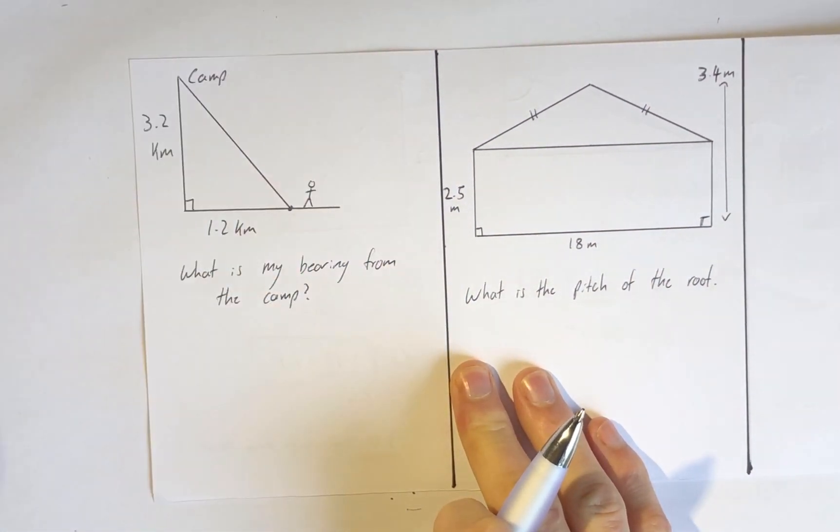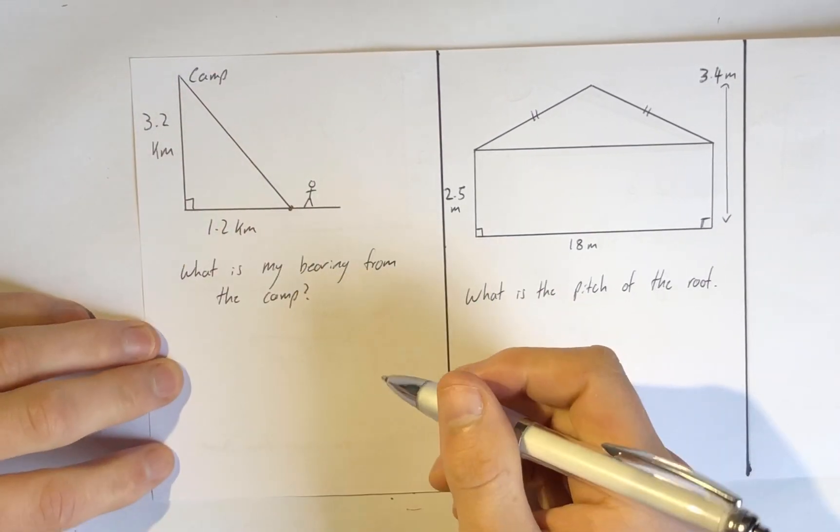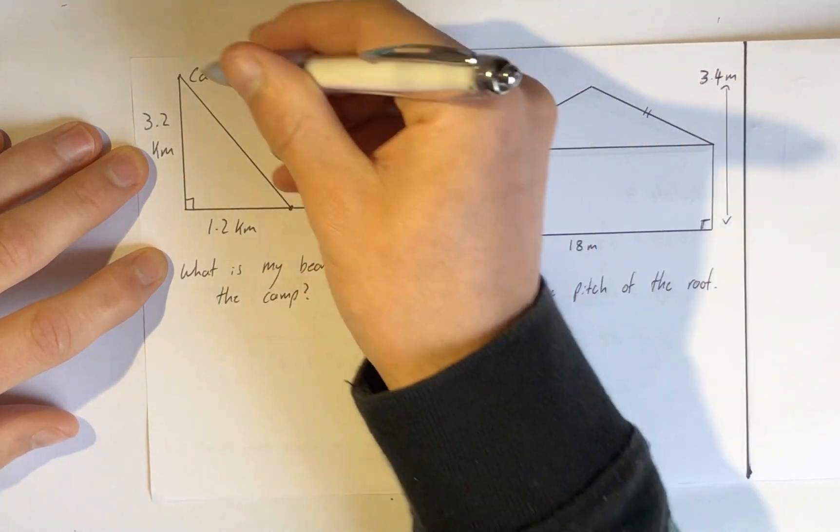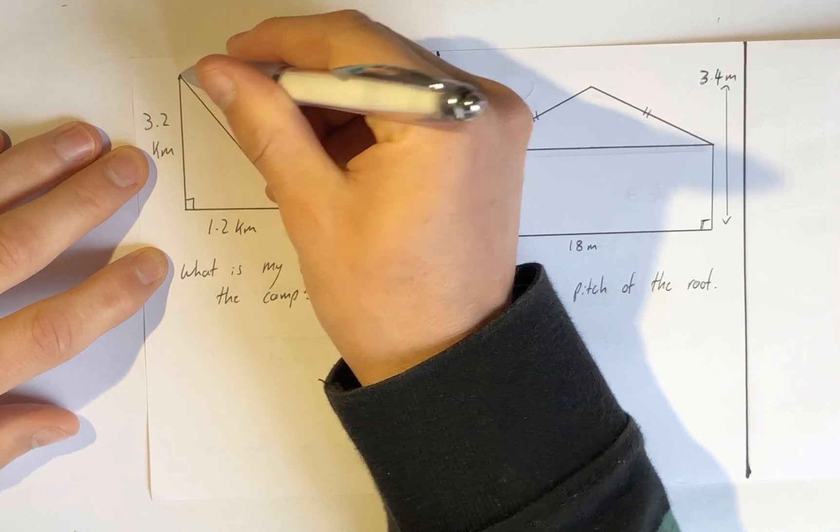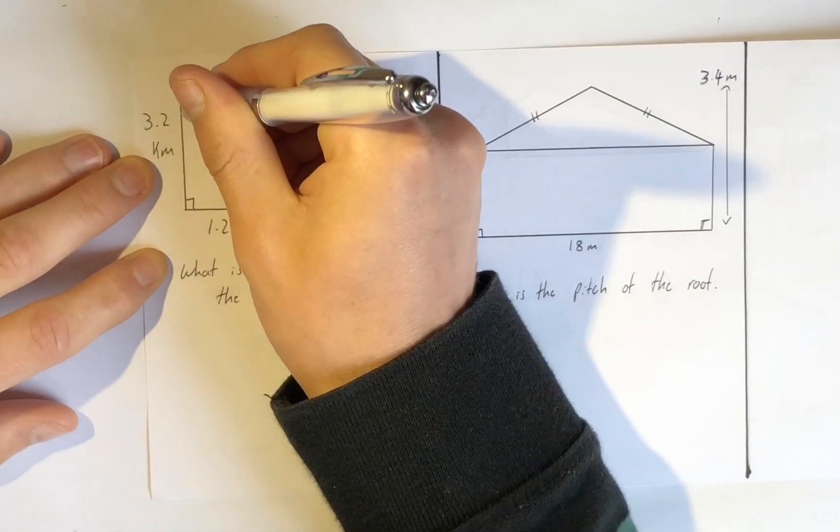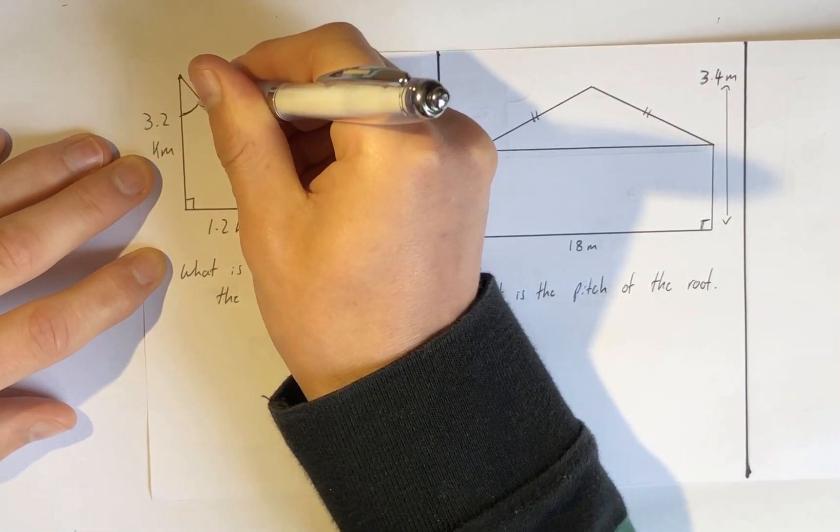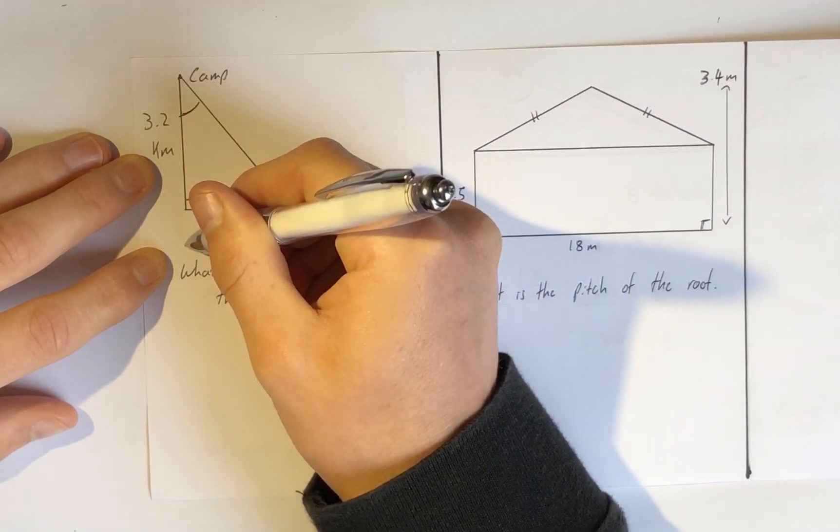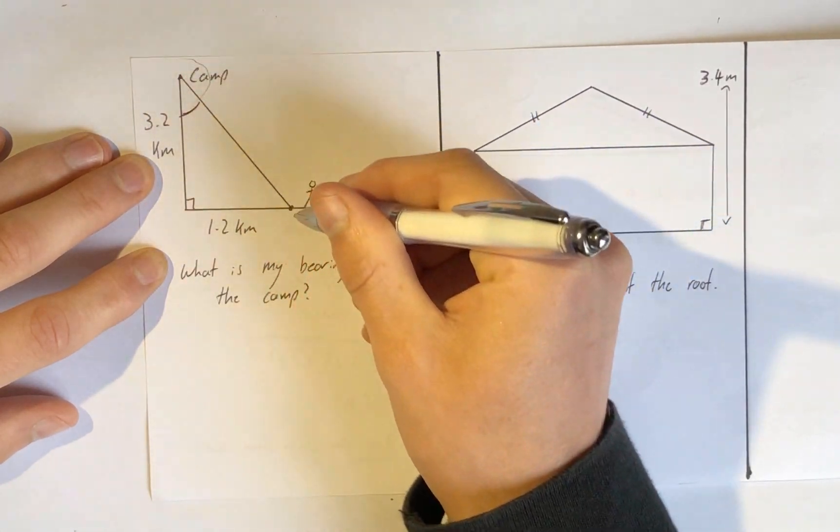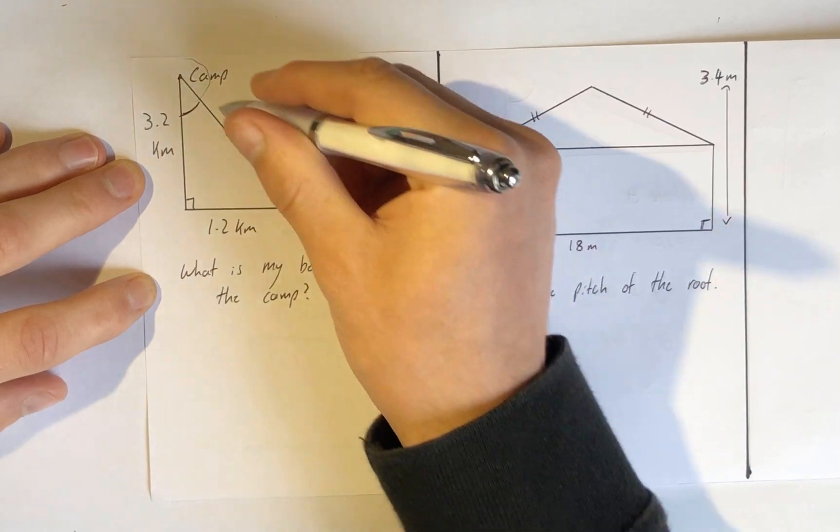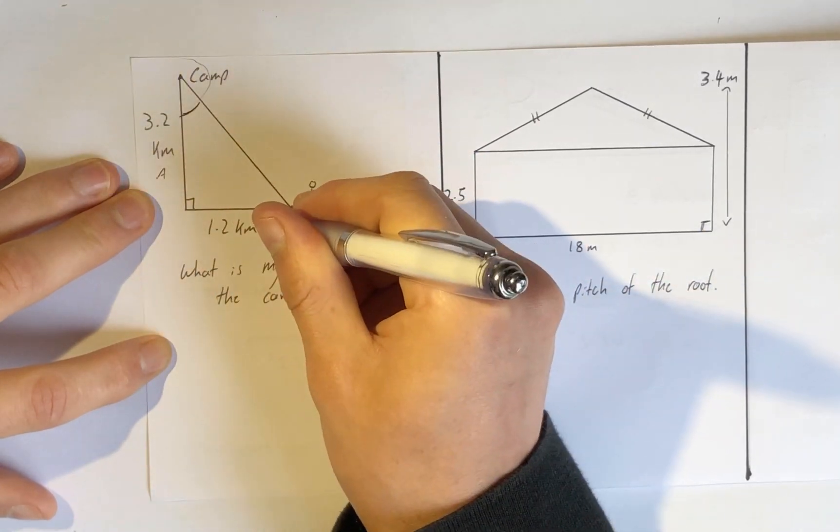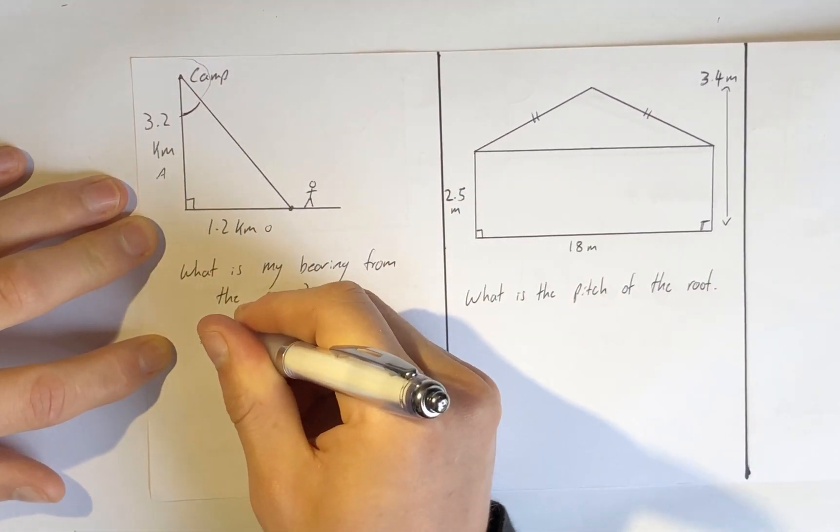Same problem again, but this is a bearing problem now. What is my bearing from the camp? That means if I was at the camp, what bearing would I look at? We need this angle here because the bearing going south is 180. If I have that bearing of 180 going all the way around and I take away this angle, then I'll know what direction someone at the camp would need to be going to catch up with me.